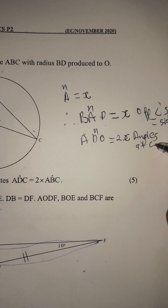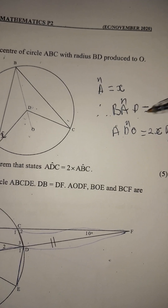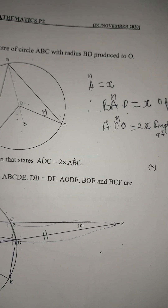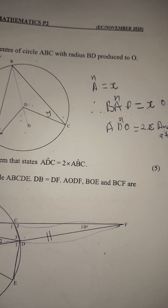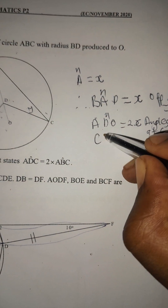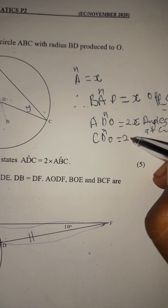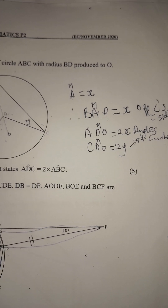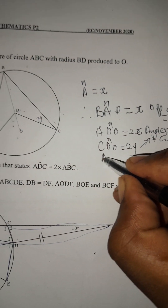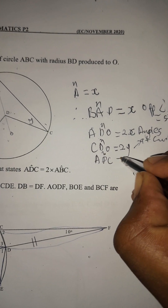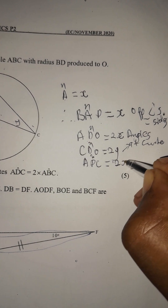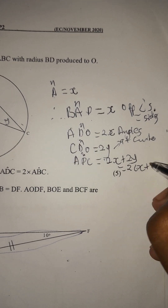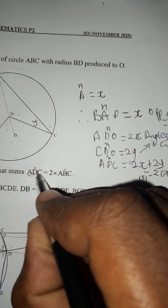Similarly, let angle CBY equal y. Then angle CDO equals 2y. The reason is the same — angle at the center. Then angle ADC equals 2x plus 2y. We factor out to get 2(x + y).